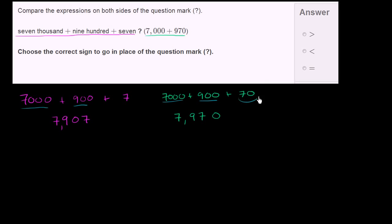And clearly, 70 is greater than 7. So the number on the right is greater than the number on the left, or the number on the left is less than the number on the right.